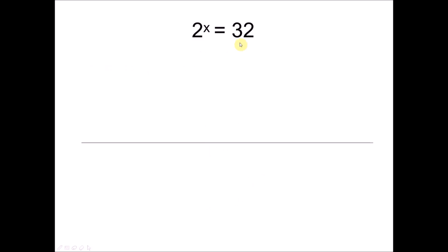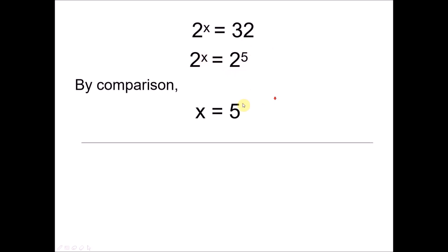When given an equation in index form like 2 to the power of x equals to 32, we previously learned to find x by converting 32 to an index number with base 2. By trial and error, we find that 32 is 2 to the power of 5. By comparison, since both bases are 2, x equals 5. But if given 2 to the power of x equals to 7, the problem comes — we cannot easily convert 7 to an index number of base 2, making it very difficult to find x.